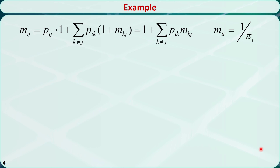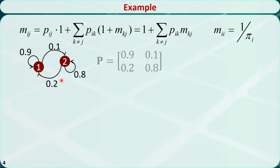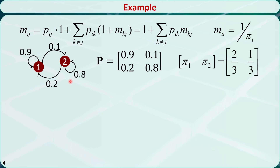Let's revisit the toothpaste brand example we examined in a previous video. This is an ergodic chain. This is the corresponding transition matrix, and the steady state probabilities are 2/3 and 1/3 for state 1 and state 2 respectively. Let's use the formula to calculate the mean first passage time from state 1 to itself. m11 is equal to 1 over π1, which is equal to 1.5.